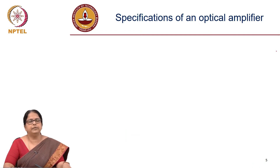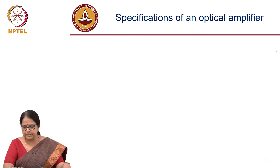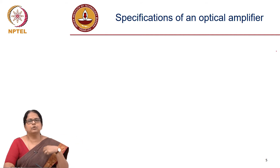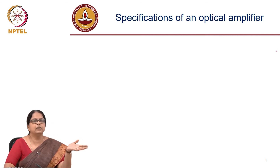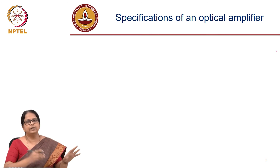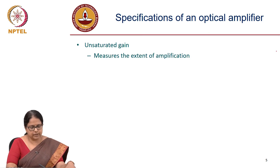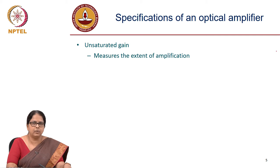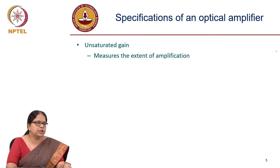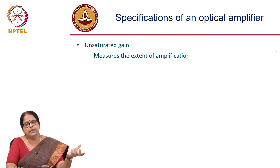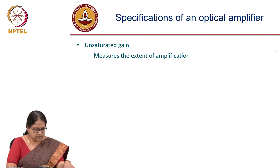What are the desired specifications you would look for in an amplifier? It has to work for polarization multiplexed data, it has to work for multiple channels, and it has to provide gain. It should not add its own noise — the noise figure should be minimal. There should not be crosstalk between different wavelength division multiplexed channels. The first specification is unsaturated gain, which measures the extent of amplification — essentially, how much gain this amplifier can provide. If I have suffered a loss of 20 dB, can this amplifier give a gain of 20 dB?